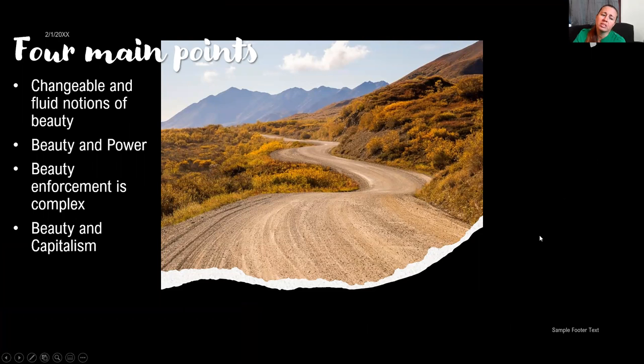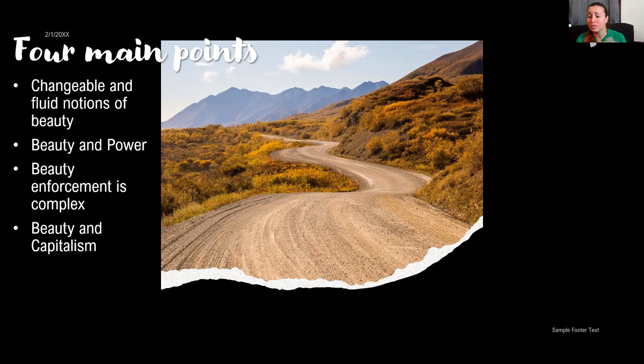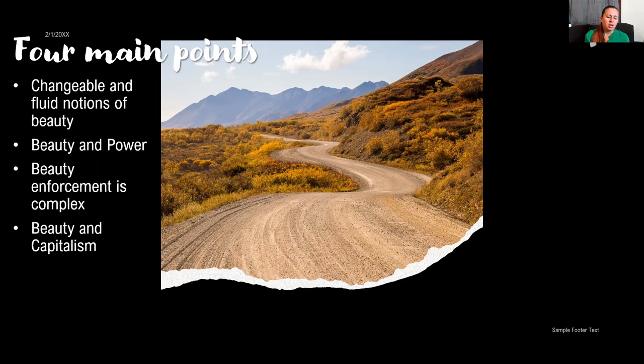Four of the main points the chapter wanted to address: first, that gender expressed through the body is changeable and fluid; and second, that notions of beauty are also changeable and fluid. What was considered beautiful in Eurocentric society in the 1700s is very different from now. What indigenous people consider beautiful compared to white corporate America is very different, and beauty standards for any specific culture or subculture within those cultures are very specific — and that matters.